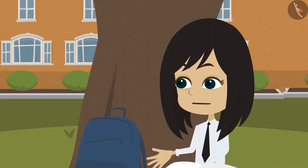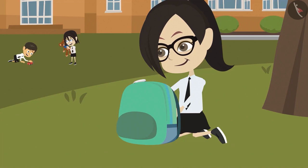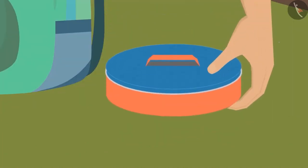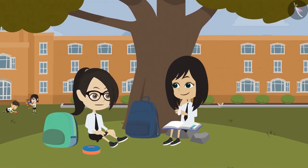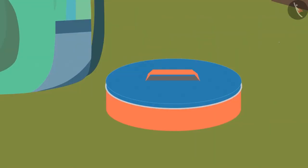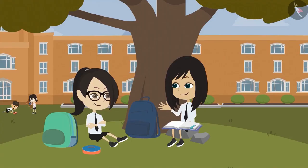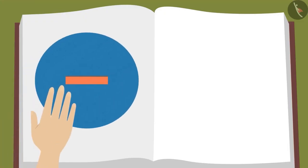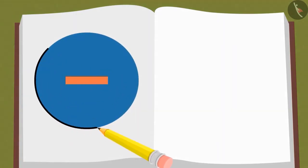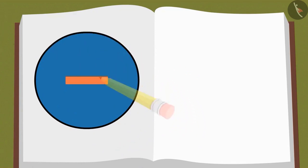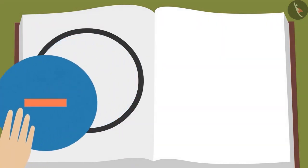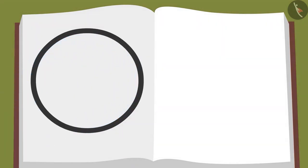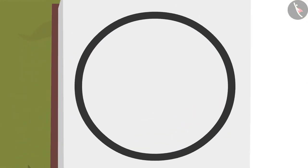The teacher takes out a tiffin box and asks what shape it is. The student says it is round. The teacher then places it on paper, traces its boundary with a pencil, and lifts the tiffin box to reveal a round figure created on the paper.